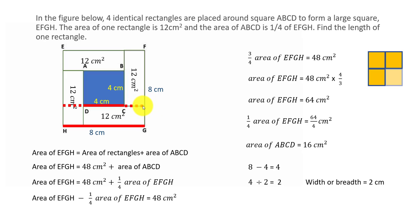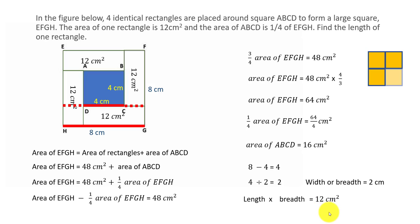The breadth of one rectangle is 2 cm. The area of the rectangle is 12 cm². Since length times breadth equals 12 cm² and breadth is 2 cm, the length is 12 divided by 2, which is 6 cm. So the length of one rectangle is 6 cm.